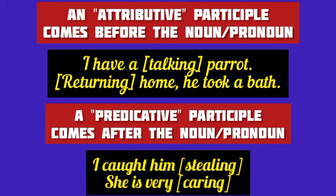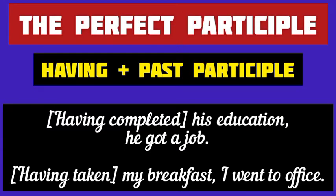We have already learned about the present participle and the past participle. But what about the perfect participle? Having plus past participle is called the perfect participle. For example, having completed his education, he got a job — here having completed is the perfect participle. The perfect participle denotes the earlier of the two activities in the same sentence. In other words, the perfect participle shows a completed state or action of the subject noun or pronoun.